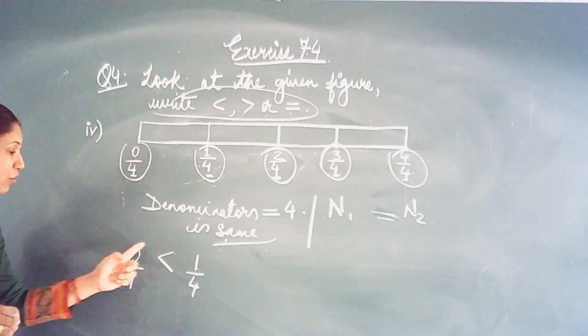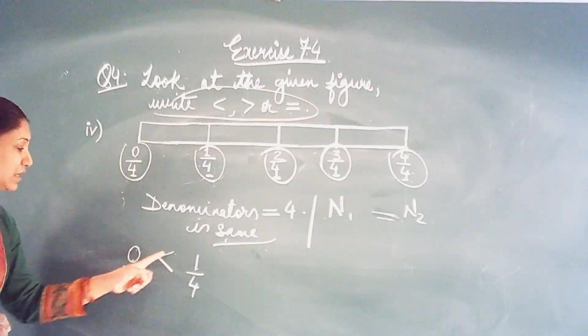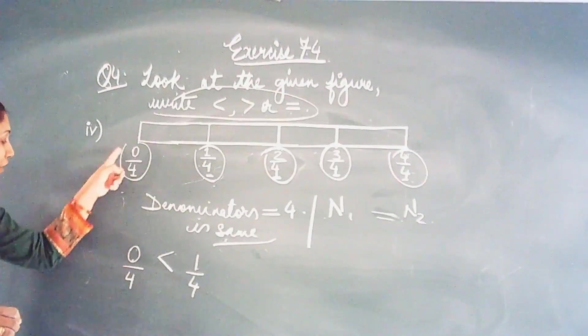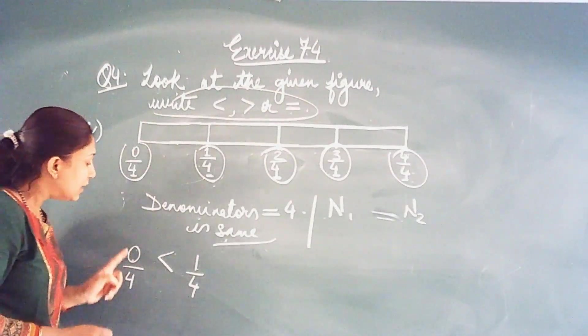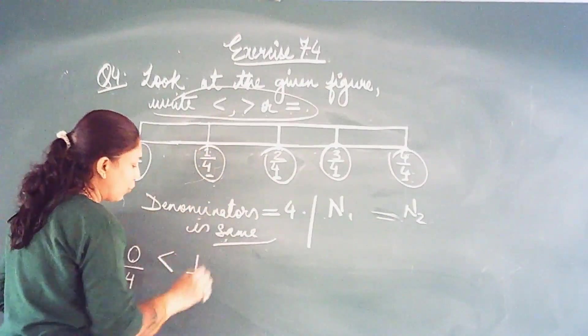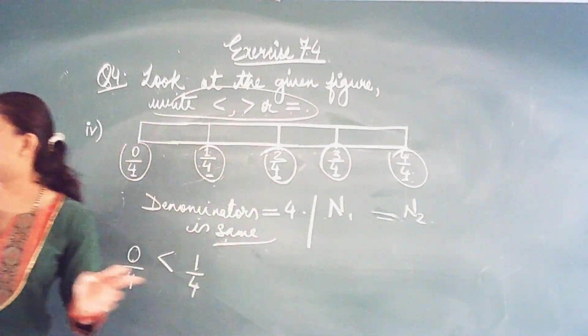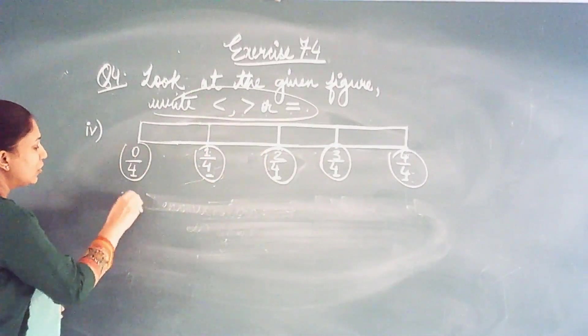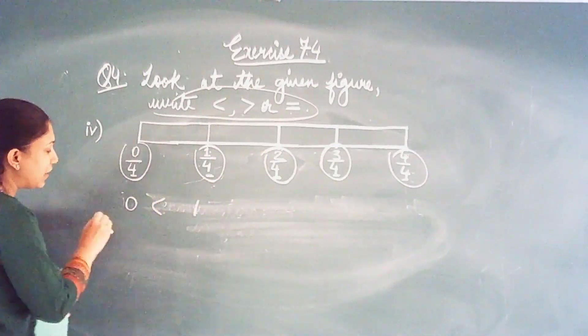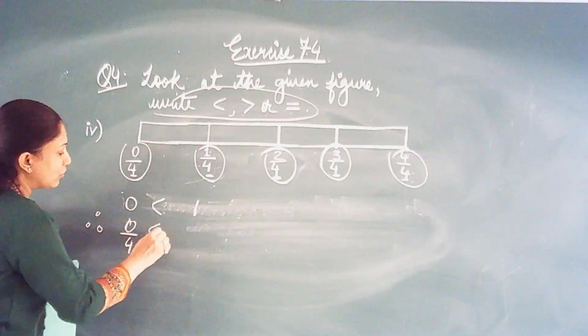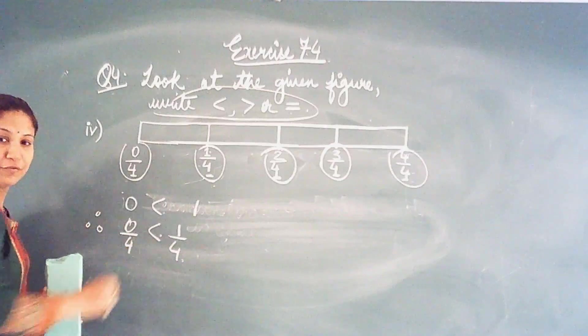See here. 0 and 1. 0 is less than 1. So 0 upon 4, this fraction will also be less than 1 by 4. Now it is compared 1 by 4 and let me write this part. I will write down here. So here we saw 0 is less than 1. So we can say 0 by 4 is also less than 1 by 4.